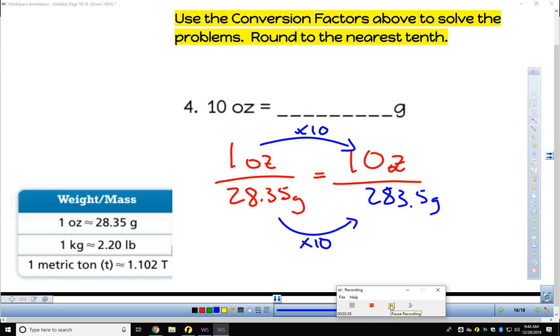Again, with the conversion factor of 1 ounce is 28.35 grams, converting to 10 ounces. I need to multiply by 10. So that mental math showed out here, 283.5 grams.